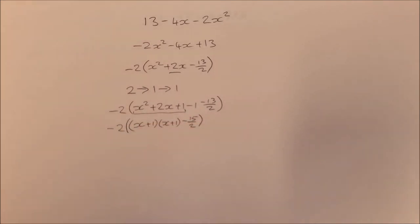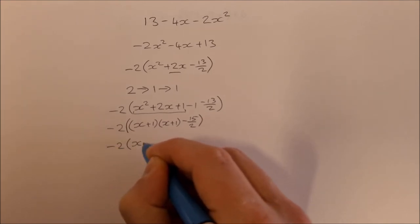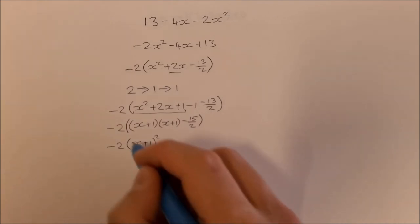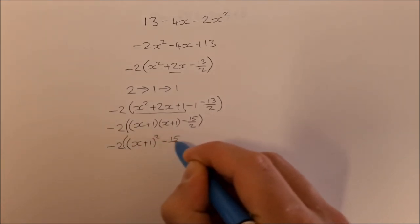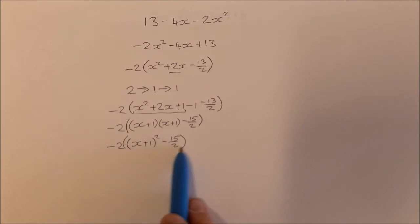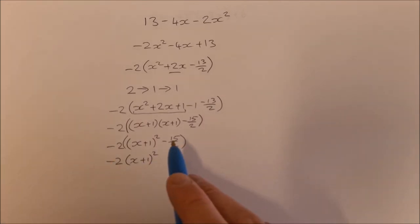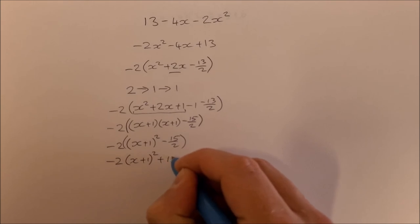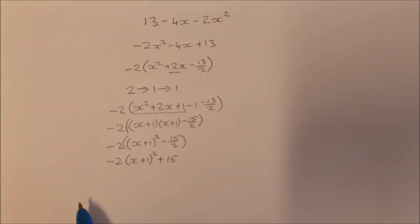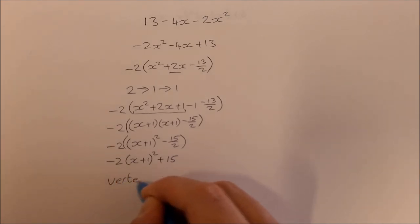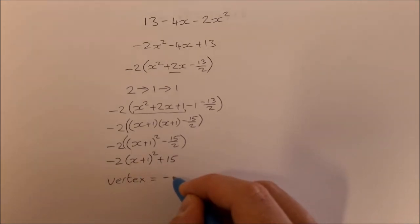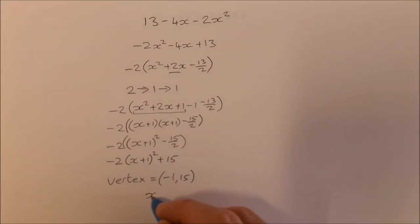I need to put an extra set of brackets around because the minus 2 is there. Next step: -2(x + 1)² - 15/2. Then just multiplying in the minus 2 for one last step: -2(x + 1)² and then -2 times -15/2 is plus 15. So now I can read off my vertex and that is equal to (-1, 15). My axis of symmetry then would be x = -1.